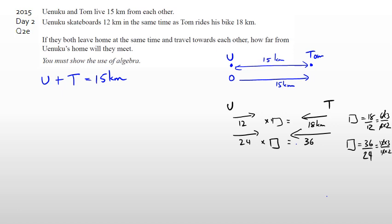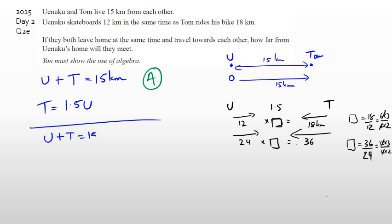So T equals 1.5U — whatever distance Mr. Yu travels, multiply by 1.5 to get Tom's distance. That's probably the hardest part; the rest is just substitution. Since U plus T equals 15, replace T with 1.5U: U plus 1.5U equals 15, giving 2.5U equals 15, so U equals 6.